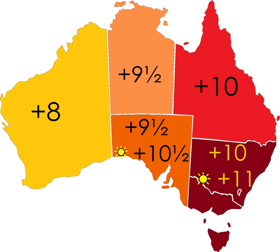Western Australia has also had a particularly involved debate over DST, with the issue being put to a referendum four times: in 1975, 1984, 1992, and 2009. All of these proposals to adopt DST were defeated. Voters registered a negative vote of 54.6% in the 2009 referendum, the highest percentage for all four of these referendums. Each referendum followed a trial period during which the state observed DST. The first three followed a one-year trial, while the 2006 Western Australian Daylight Saving Bill instituted a trial of DST beginning on 3 December 2006 and lasting for three years.